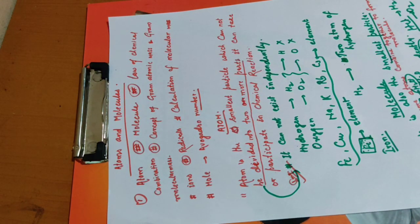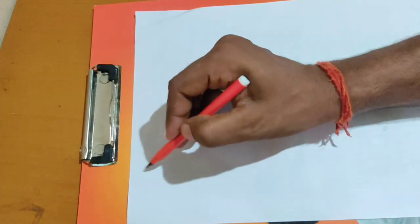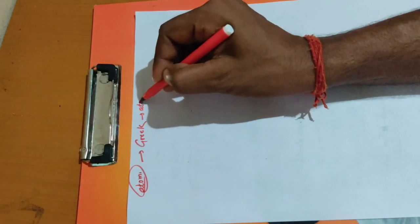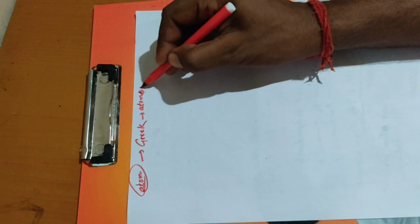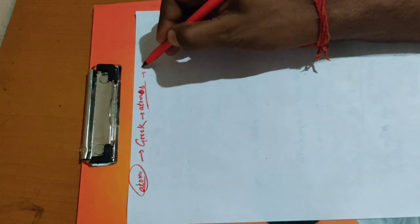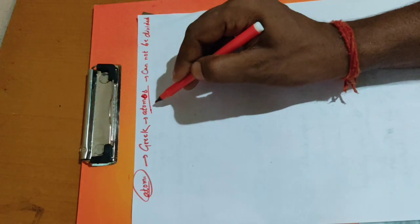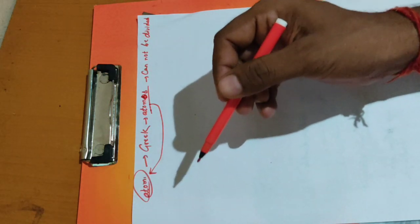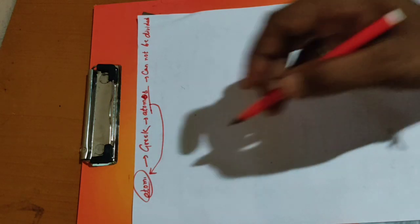Now about the origin of the word 'atom' - this name came from a Greek word. The Greek word was 'atomos', and atomos means 'cannot be divided.' So from this came the definition that it cannot be divided. But later, it was found that the atom is also divided into three smallest subatomic particles - electron, proton, and neutron - which we will discuss later.